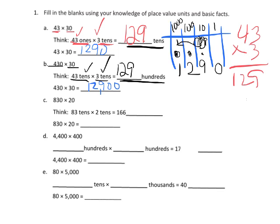Let's skip down to question D. So we've got 4,400 times 400. What they're saying is 4,400 is really 44 hundreds. 400 is really 4 hundreds.